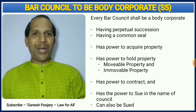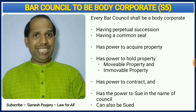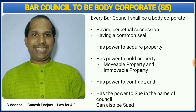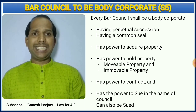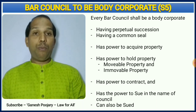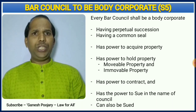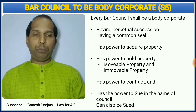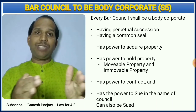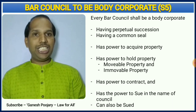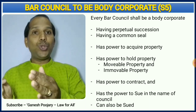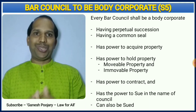This is one of the easiest answers you can attempt in any exam. Section 5 says bar council to be a body corporate. Being a body corporate, it will have perpetual succession and it will have its own seal. The bar councils can acquire and hold properties, and such properties can be movable as well as immovable. The bar councils can enter into contracts, and finally they can sue others and they can be sued by others also.